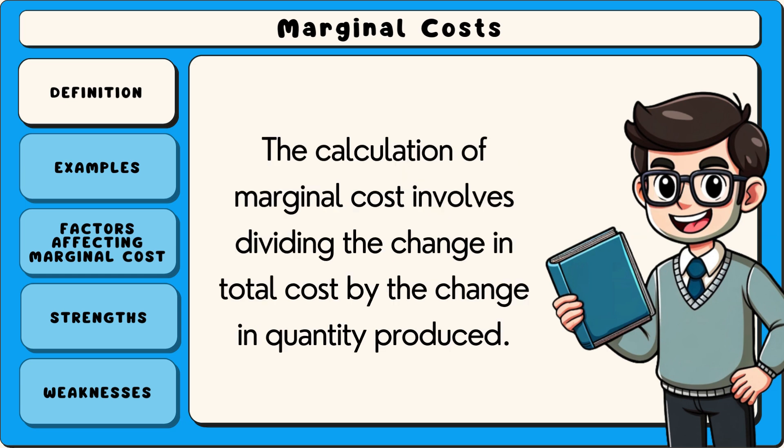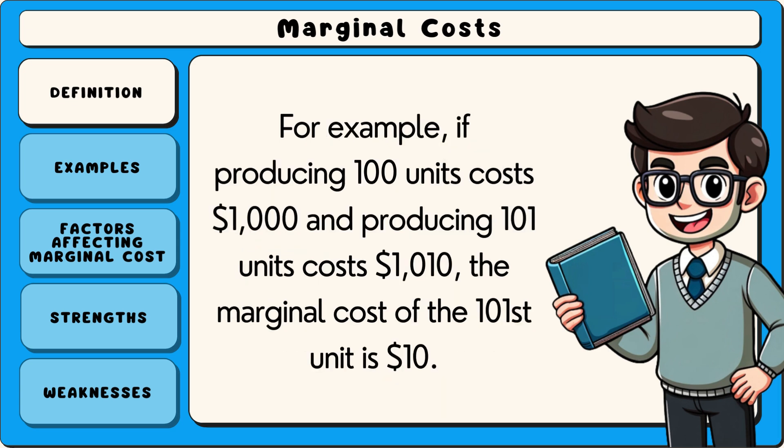The calculation of marginal cost involves dividing the change in total cost by the change in quantity produced. For example, if producing 100 units costs $1,000 and producing 101 units costs $1,010, the marginal cost of the 101st unit is $10.